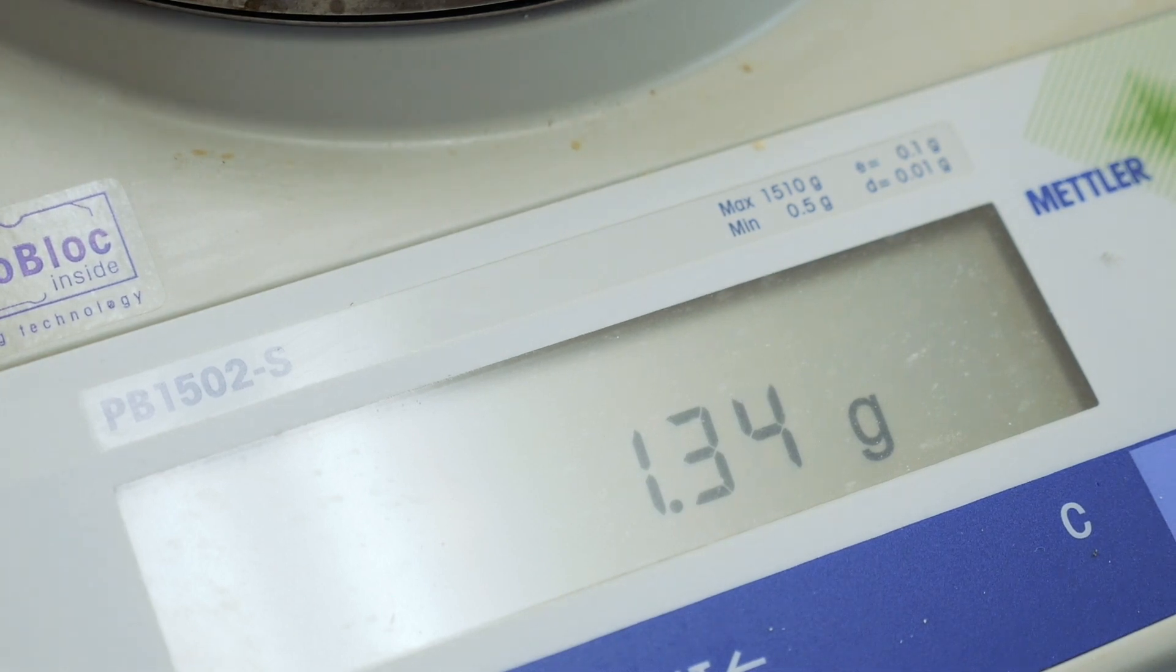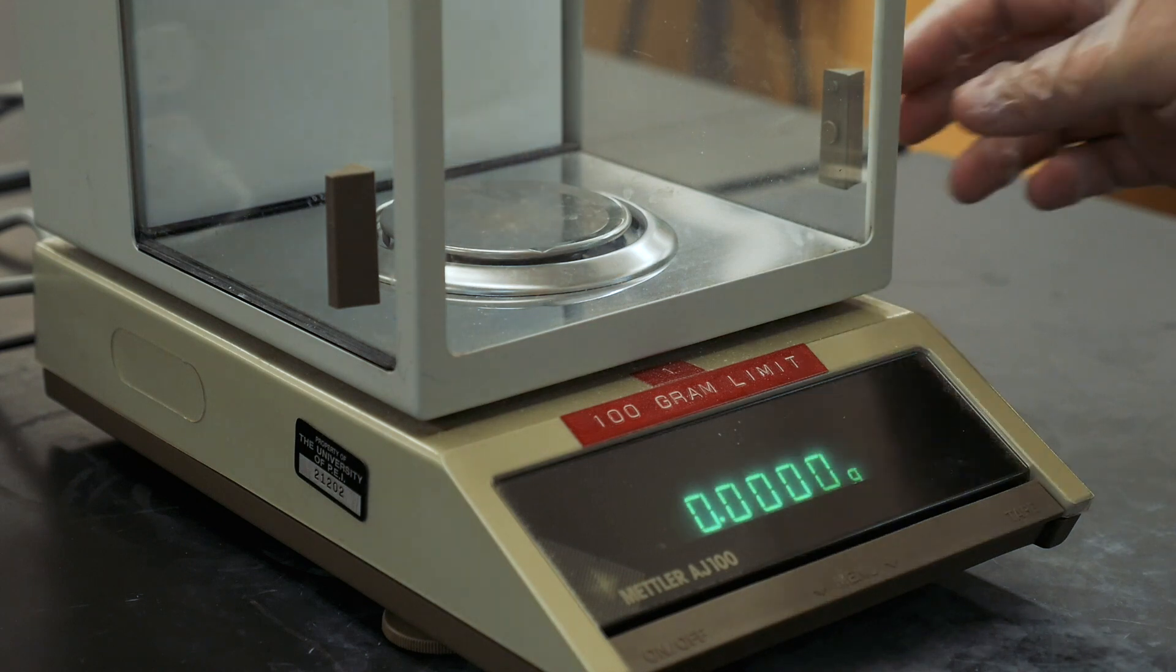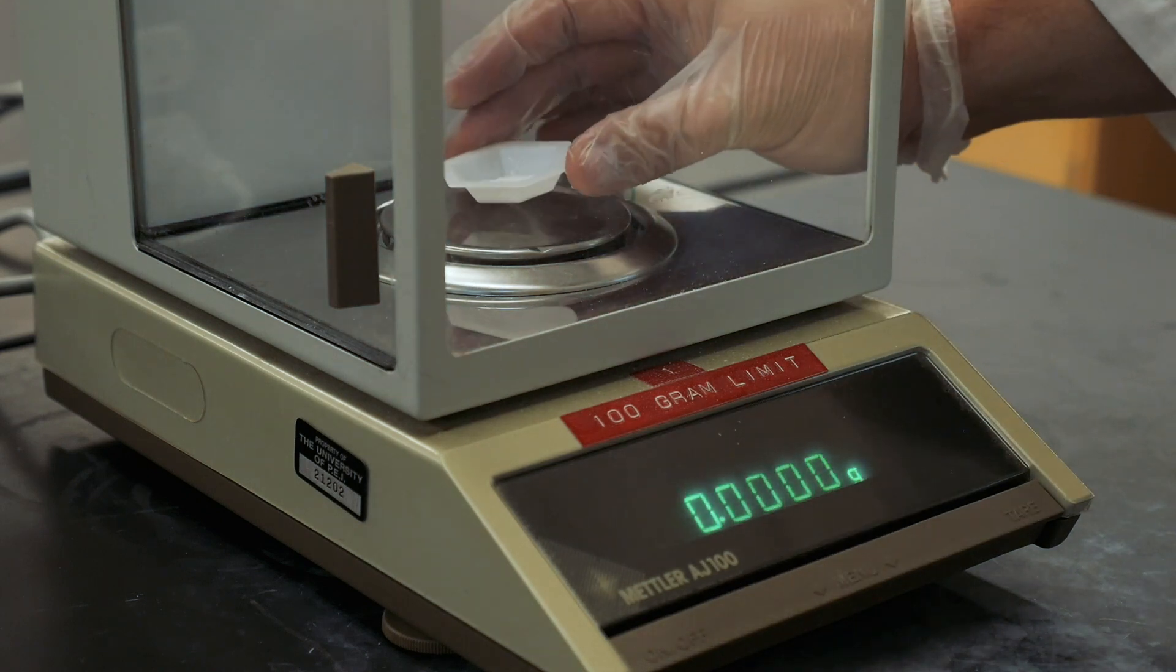More accurately, you'll use an analytical balance. Zero the analytical balance by pressing the tare button and it should read zero grams. Place the weighing dish containing your KHP on the pan of your balance and determine the total mass.